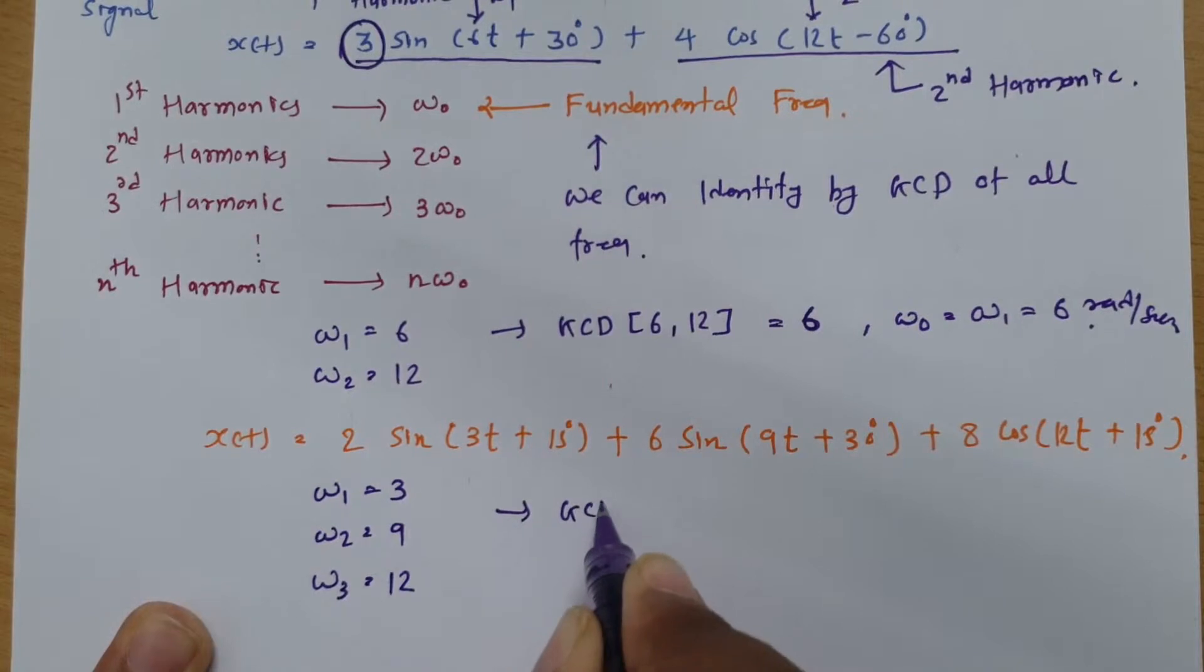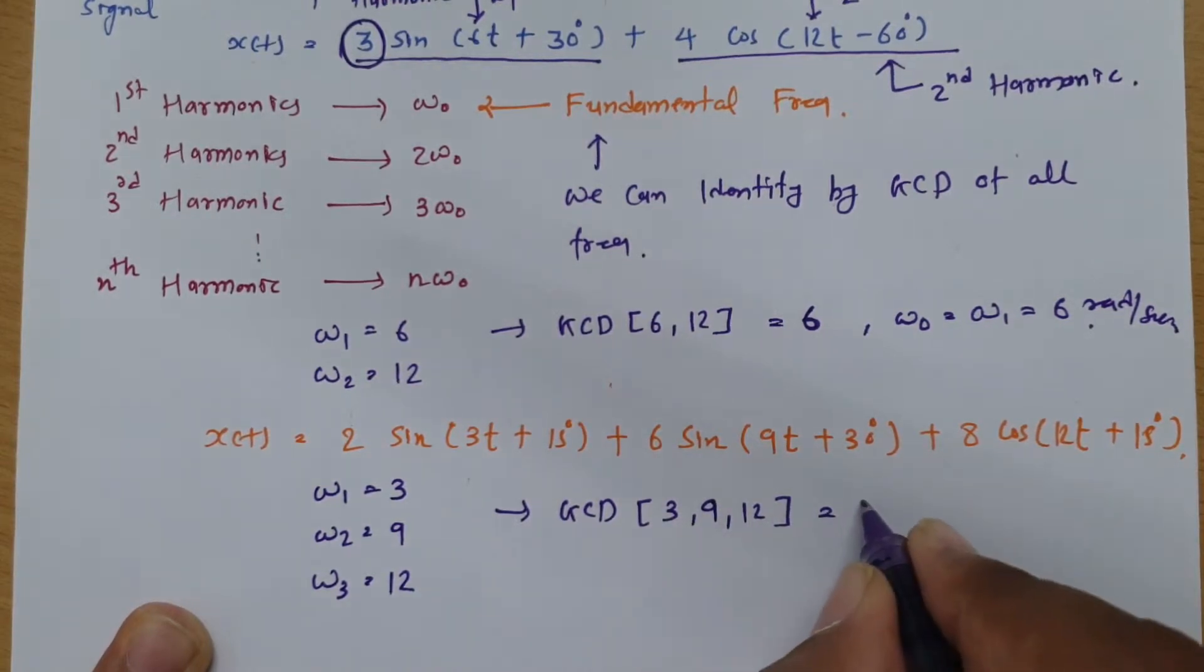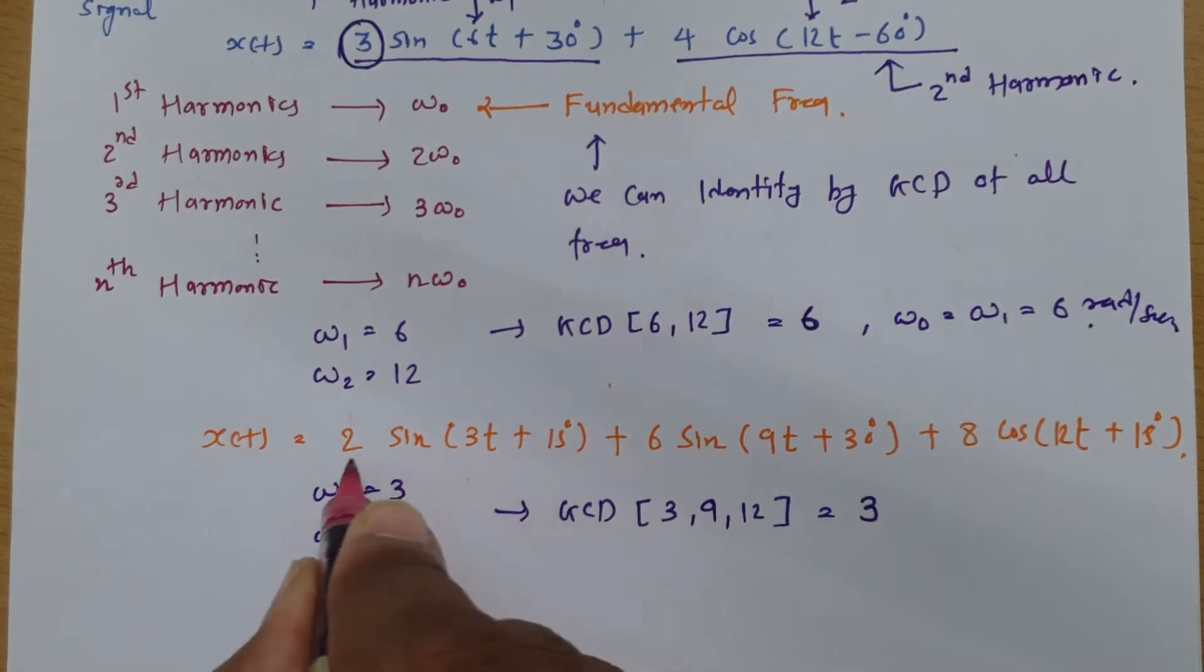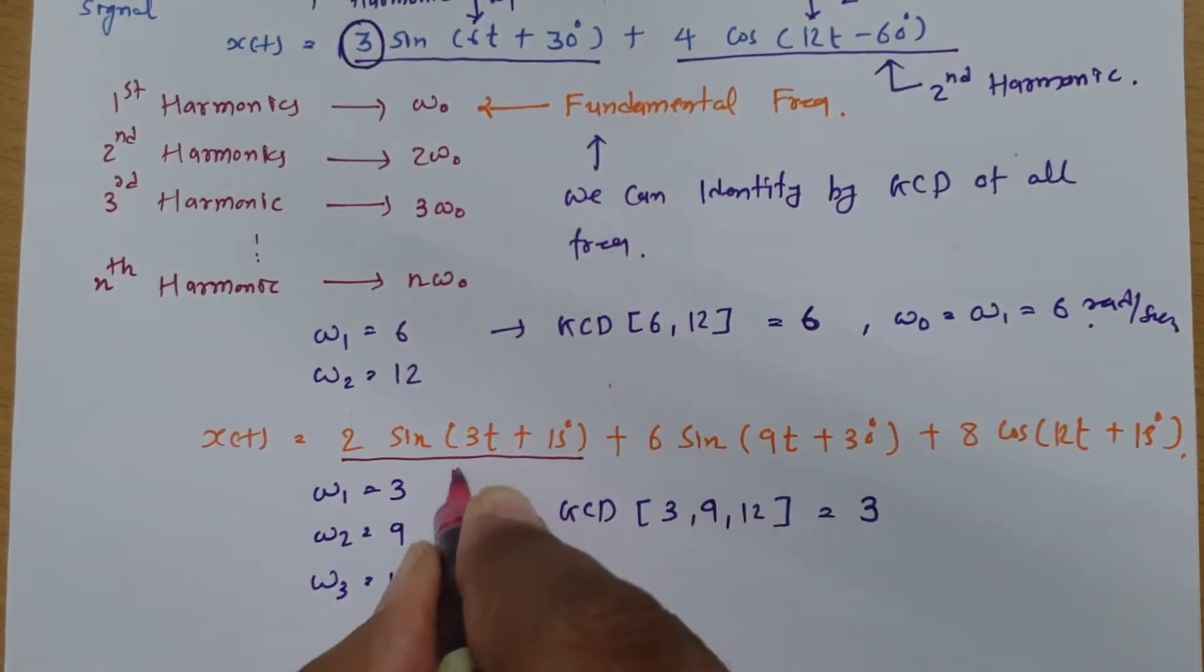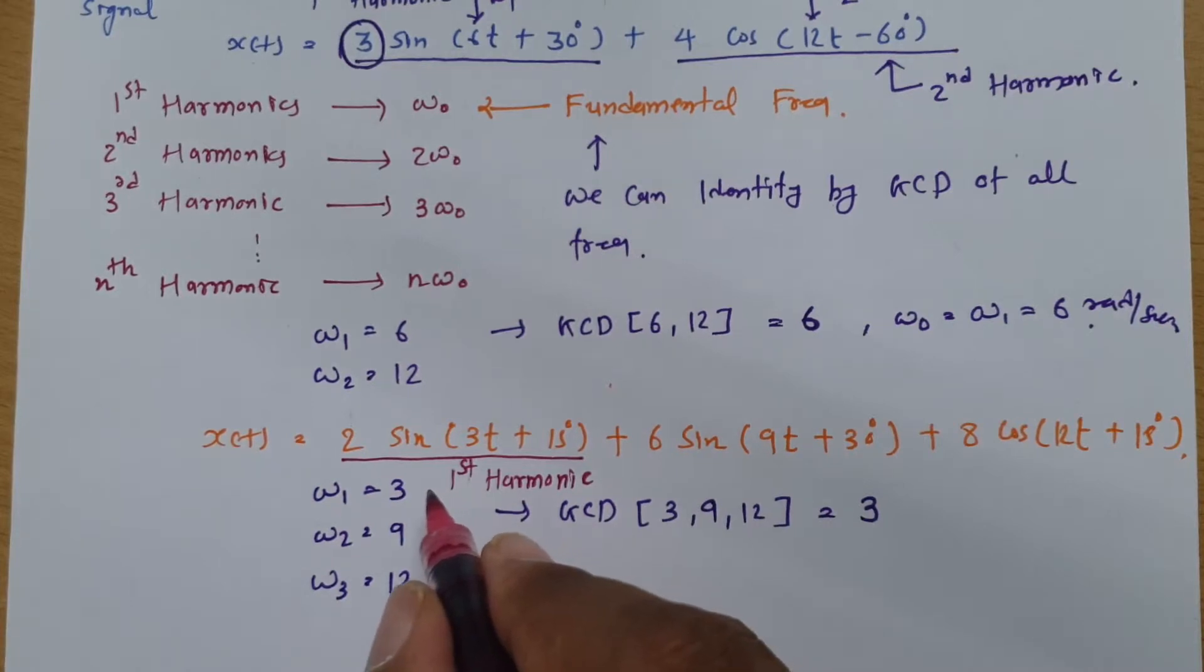So now we need to identify GCD of these 3 frequencies. So GCD 3, 9 and 12. So greatest common divisor of this is 3. See 3 can be divided by 9. It could be divided by 12. So greatest common divisor is 3. So as greatest common divisor is 3. We can say this term. Now this is first harmonic. Right? Or one can say fundamental frequency.